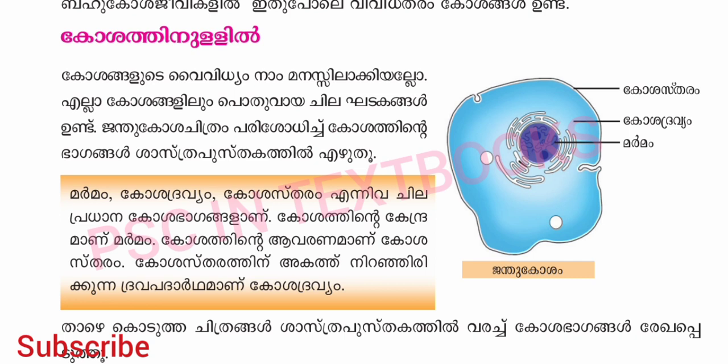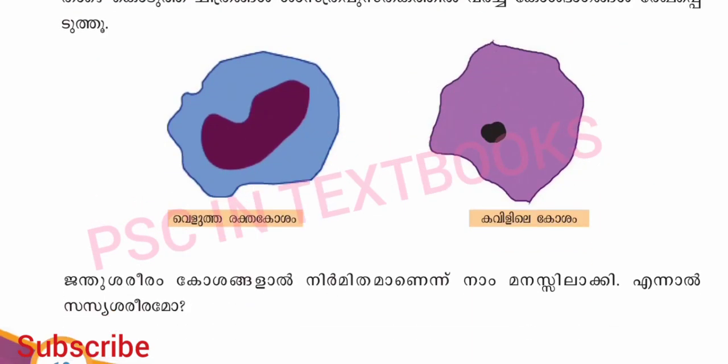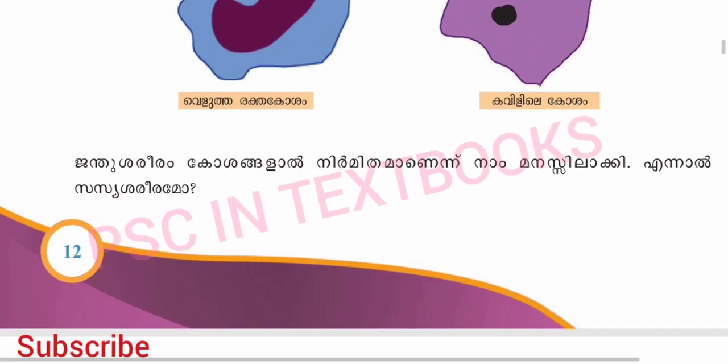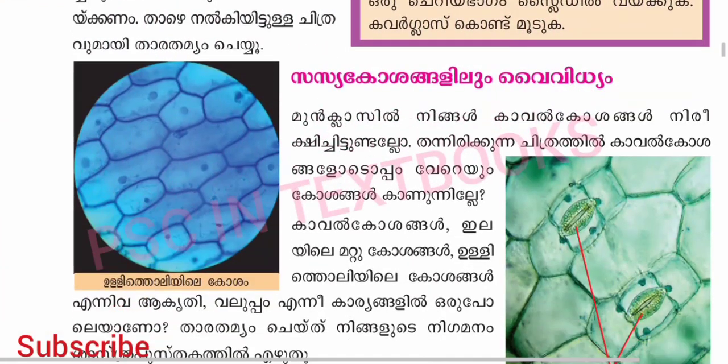This is called Corsha Stharra, Corsha Dhrivya and Márma. The basic thing is to do a long life. One way of life is to do a hard life. A short life is a hard life.